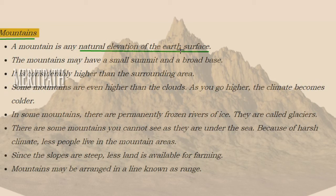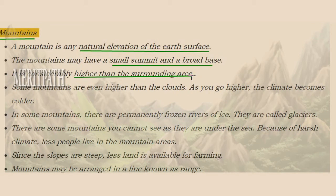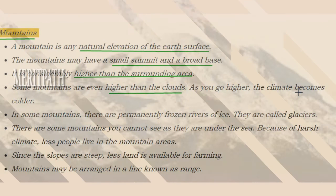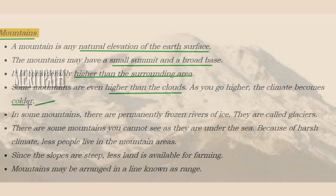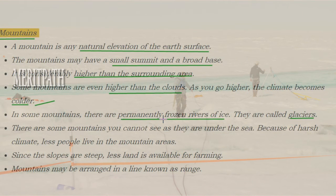A mountain is any natural elevation of the earth's surface. Mountains have a small summit and a broad base - the base is always broad and the top is always narrow. Mountains are at a greater height than surrounding areas, sometimes higher than the clouds. As altitude increases, temperature decreases, so the climate becomes colder as we go higher. Some mountains have water in a permanently frozen state due to these lower temperatures, and these permanently frozen rivers of ice are known as glaciers.